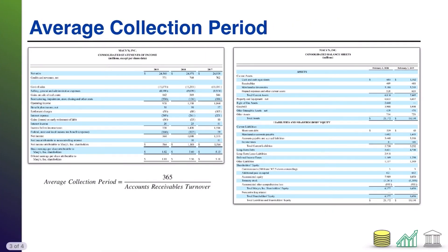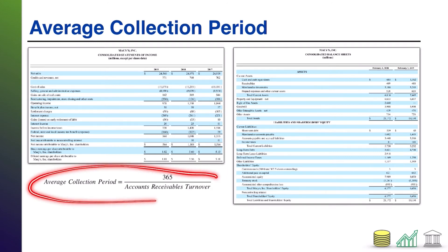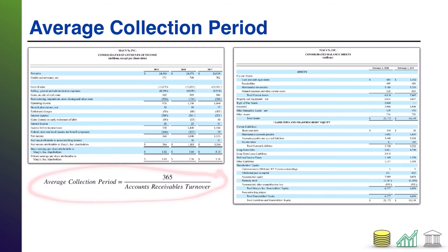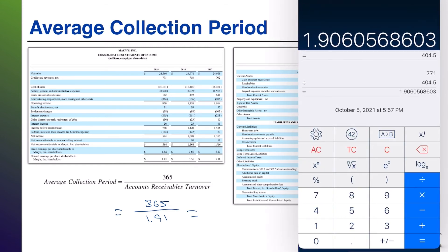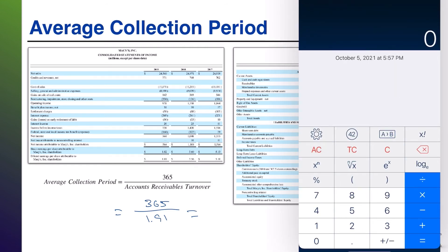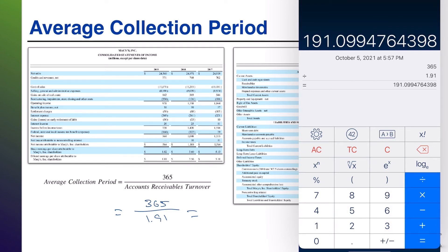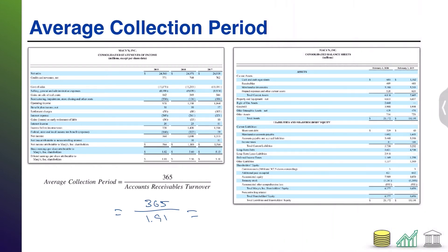The next one is the average collection period. The average collection period is actually derived from the accounts receivable turnover ratio. The formula is just 365 — the number of days in a year — divided by the accounts receivable turnover. So for Macy's: 365 divided by 1.91. Pull out the calculator — it'll be somewhere around 180 to 190. That gives us 191 days.